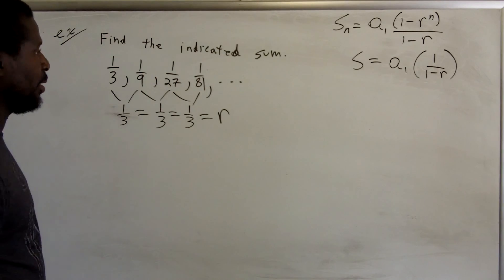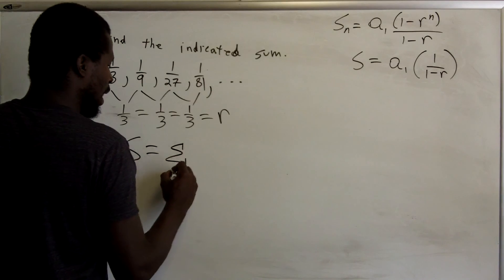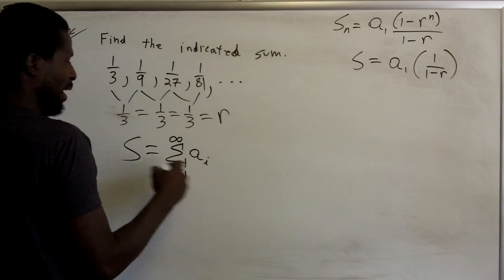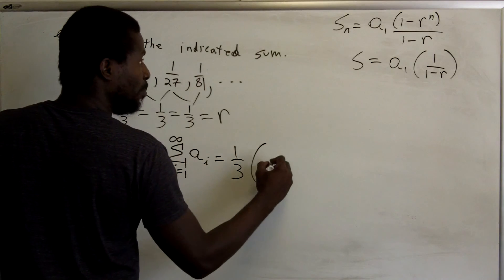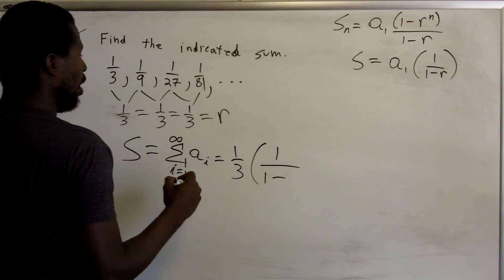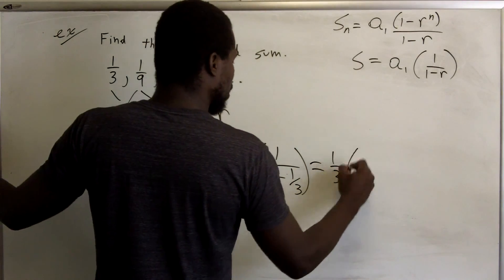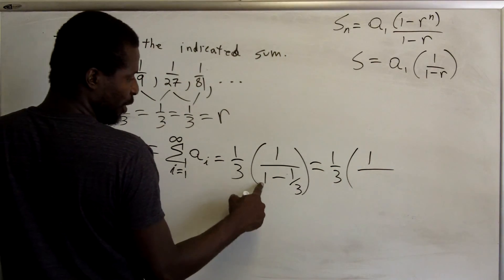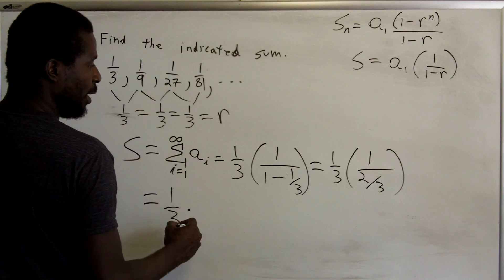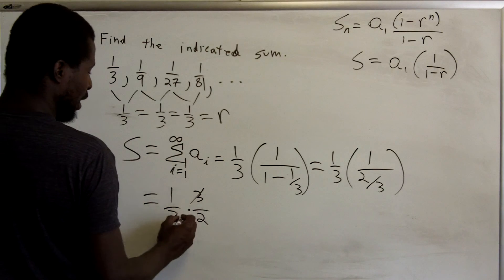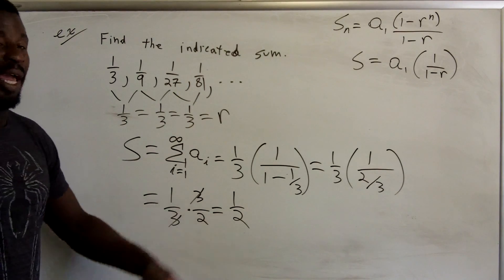Since we want the infinite sum, we use the formula: S = a1·(1/(1 − r)). Here a1 = 1/3 and r = 1/3, so S = (1/3)·(1/(1 − 1/3)) = (1/3)·(1/(2/3)). Since 1 minus 1/3 equals 2/3, we get (1/3)·(3/2). The 3s cancel, leaving 1/2. So if you add up all these terms all the way to infinity, they sum to exactly 1/2.